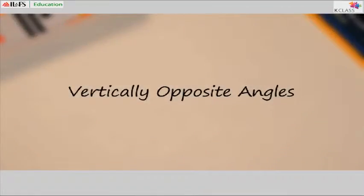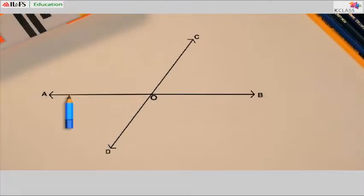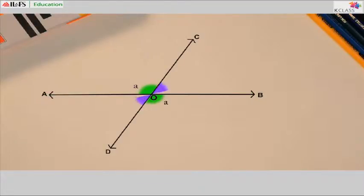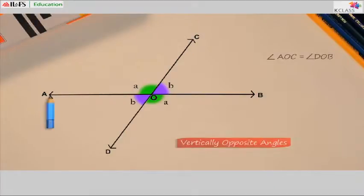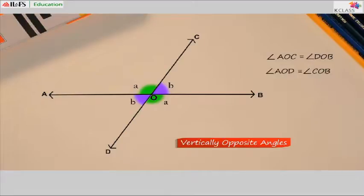Vertically opposite angles. Take a look at this figure. Lines AB and CD intersect at a point O. As a result, two pairs of angles are formed. The first pair, marked A, are opposite to each other. The second pair, marked B, are also opposite to each other. Angle AOC and angle DOB are vertically opposite angles, and angle AOC equals angle DOB. Similarly, angle AOD and angle COB are vertically opposite angles, and angle AOD equals angle COB.